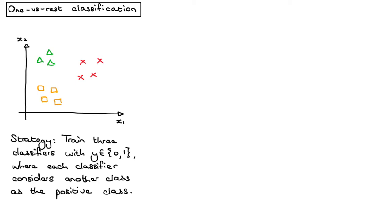Here in this cartoon example we've got three classes: the triangles, the crosses, and the squares. We want to train a classification model which can do multi-class classification, telling us whether a new input point, let's say one here, belongs to triangles, crosses, or squares.